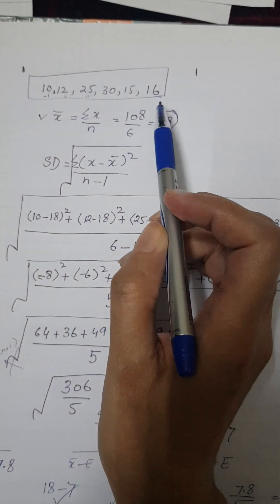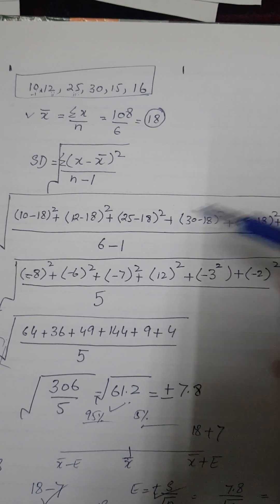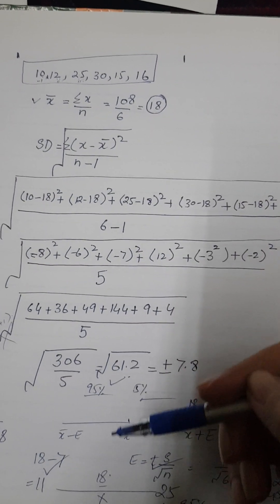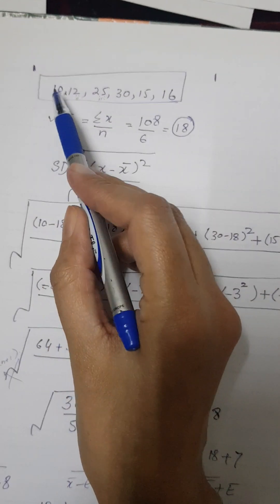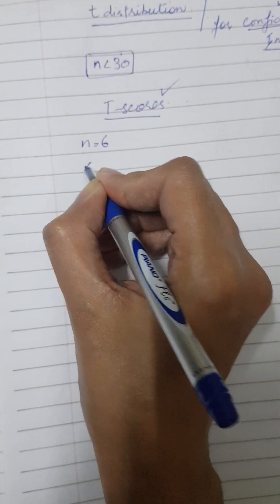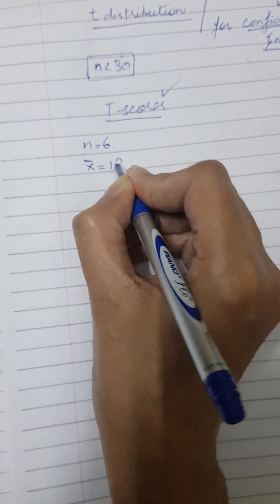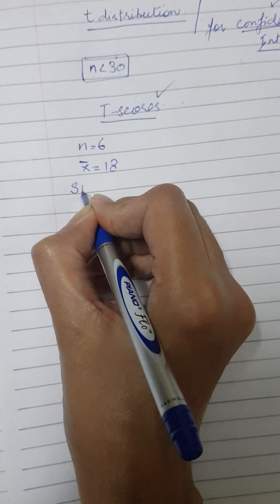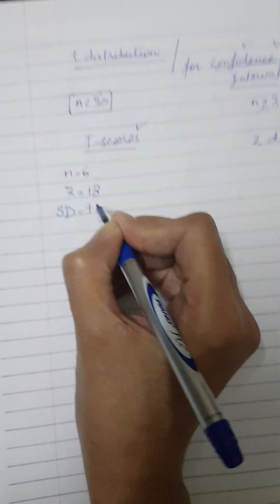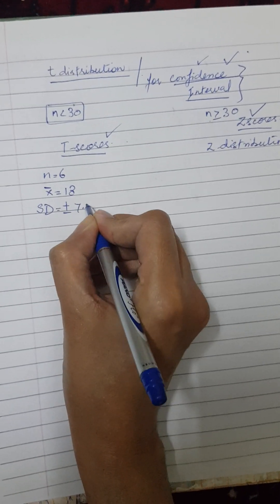If you remember in our very initial video of how to calculate the standard deviation, there we used a data set of 6. So we are using the same data set. N is equal to 6. The sample mean is 18 and standard deviation is plus or minus 7.8.